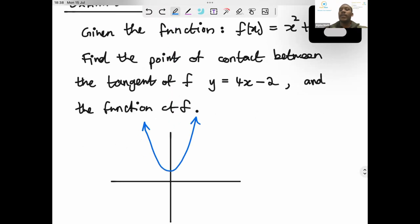And then there's a tangent to this function, maybe at an angle like that. The tangent is going to look something like this. So the question is, what is the coordinates to this point where this line, y equal to 4x minus 2, is a tangent to the graph of f? That's the question.